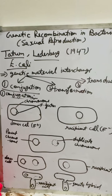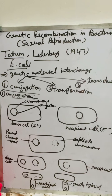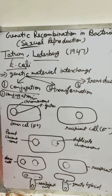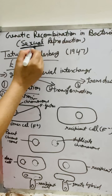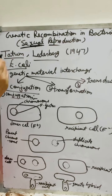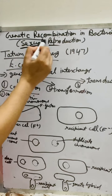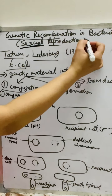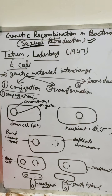Hello students, this is bio botany class by Mini. Today's topic is genetic recombination in bacteria. As I told you, I described sexual reproduction in the last video — binary fission, which is asexual reproduction. Now, in bacteria there is no sex organ, but there is genetic recombination, and because of this, bacteria possess sexual reproduction.